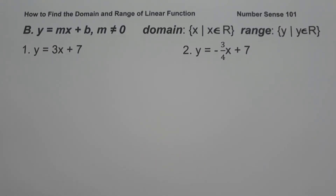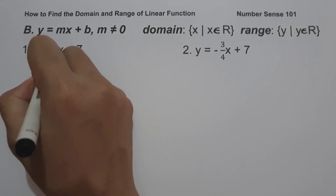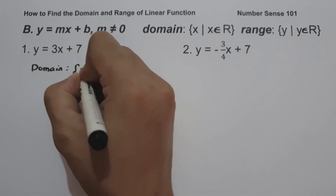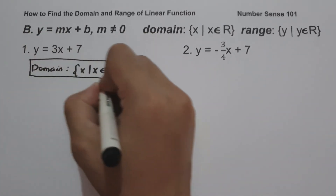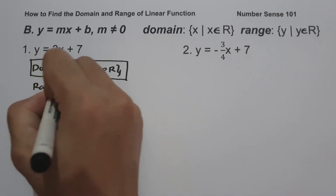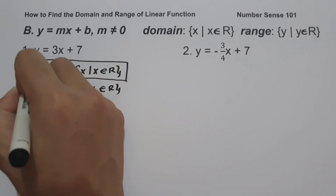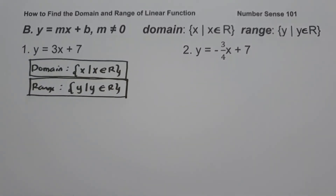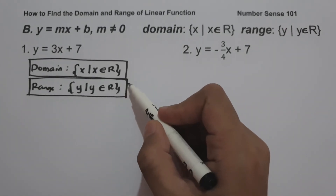On example number one, we have y equals 3x plus 7. As you can see, the given function is written in the form of y equals mx plus b. The domain is the set of values of x such that x is the set of all real numbers, and the range is the set of values of y such that y is the set of all real numbers. To find the domain and range of the inverse linear function, since the domain and range is the set of all real numbers, therefore the domain and range of the inverse linear function is also the set of all real numbers.